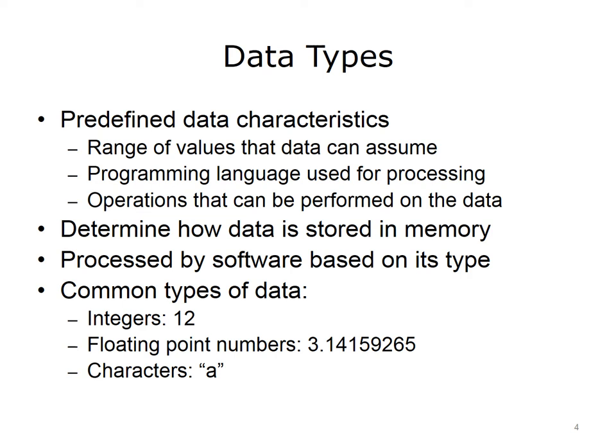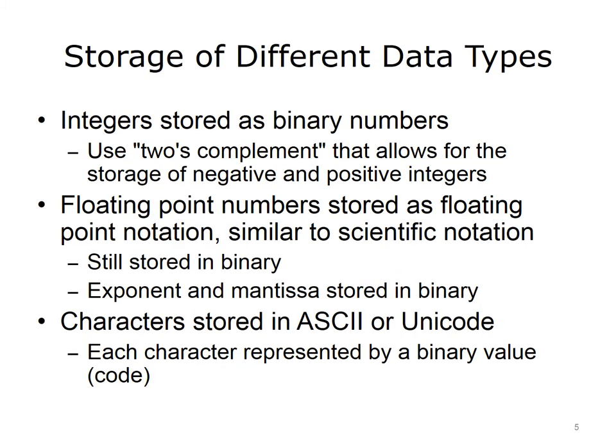Data types are predefined data characteristics. They include the range of values data can assume, the programming language used for its processing, and the operations that can be performed on it. Data types determine how data is stored in memory. Data is processed by software based on its type. Some common data types include integers — for example, the whole number 12 — floating point numbers — for example, 3.14159265 — and characters — for example, the letter A. Let's look at how those three data types are stored in a computer's memory.